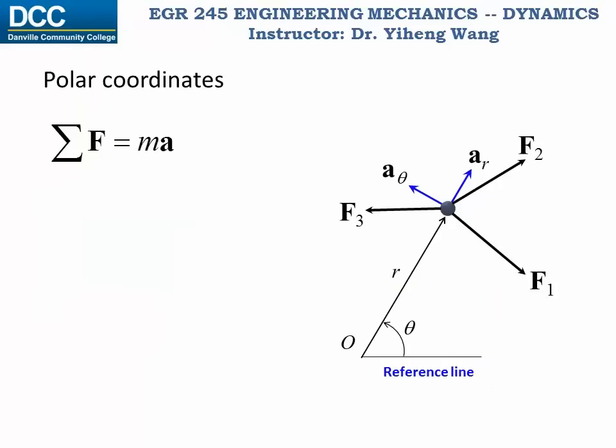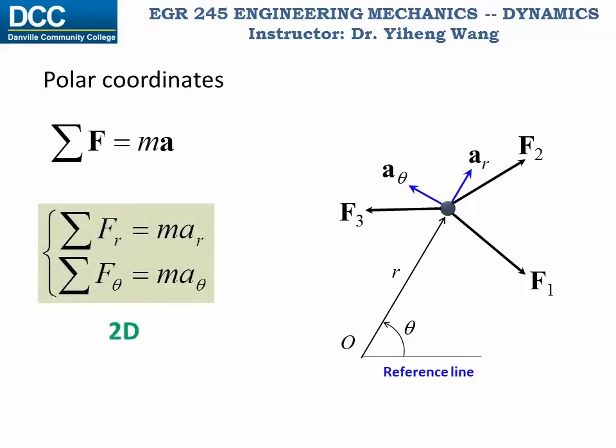For a 2D problem, the 3D cylindrical coordinate system reduces to the 2D polar coordinate system, and the acceleration only has ar and a-theta two components. The vector form of the equation of motion can be rewritten into two scalar equations: the resultant force along the radial direction equals the mass times acceleration along the radial direction, and the resultant force along the transverse direction equals m·a-theta. Once again, ar and a-theta can be evaluated by these two equations.